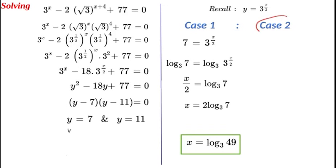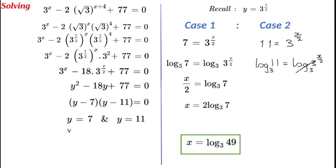Now we solve Case 2, where y equals 11. So 3 to the power of x over 2 equals 11. Applying log to the base 3 of both sides: log base 3 of 11 equals log base 3 of 3 to the power of x over 2. The log base 3 and the base 3 cancel, leaving x over 2. Putting it in order, x over 2 equals log base 3 of 11. Multiplying across by 2, we get 2 log base 3 of 11, and we can bring this up as a power.